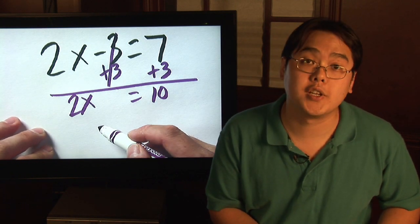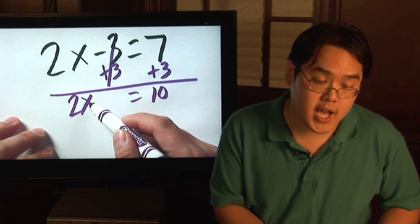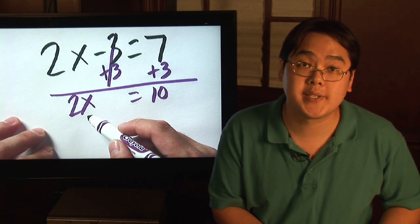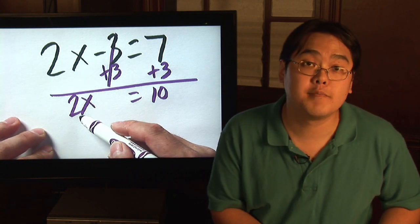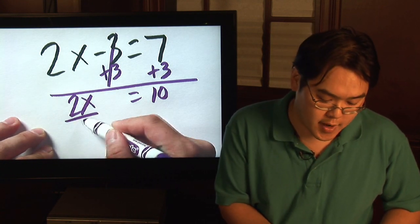Or, here's the other way to do it. It's 2 times x. So if you want to get x by itself, again, you use the opposite operation. So the opposite of multiplication is division. So divide both sides by 2.